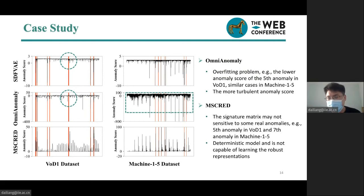The inferior performance of MSCRED may arise from the signature matrix, which is not sensitive to some real anomalies, especially for anomalies with small degree or shorter duration, such as the fifth anomaly region in VoDI-1 dataset and the seventh region in Machine-1-5 dataset. Another possible reason lies in that MSCRED is a deterministic model and is not capable of learning robust representations of varying characteristics in multivariate time series data.